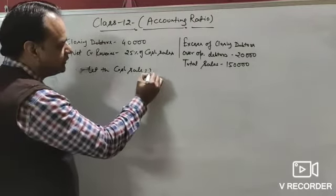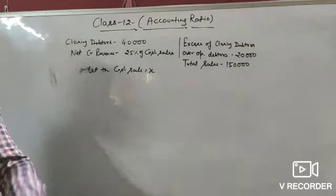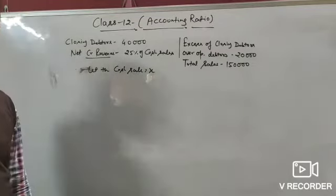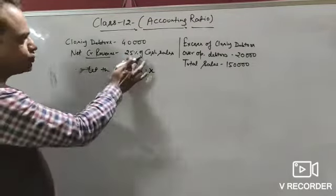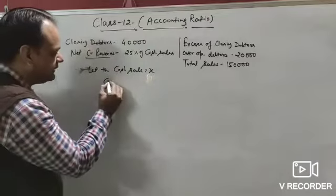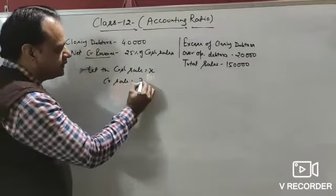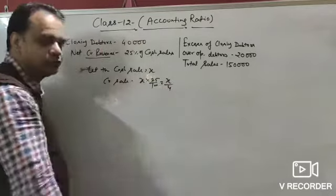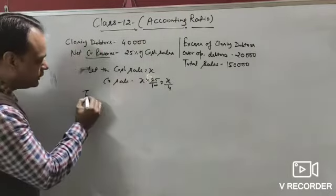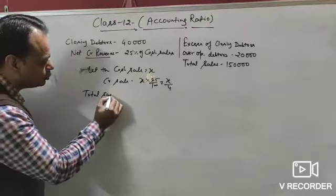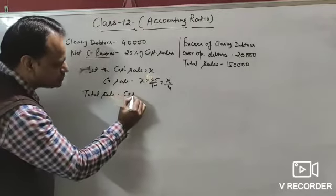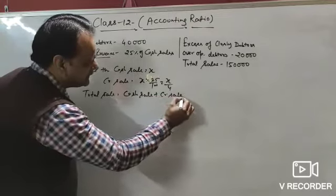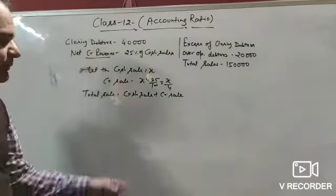Let cash sale = x. Since credit revenue from operation is 25% of cash sale, credit sale = x/4 (i.e., 25% of x). Total sale = cash sale plus credit sale.